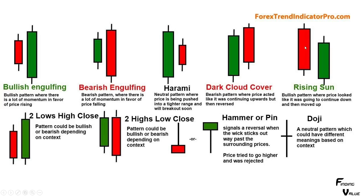The opposite pattern: we're coming down, we have a down day, it opens up below the prior candle, but throughout the day it works its way higher above halfway of that candlestick - this is called a bullish piercing or a rising sun. Patterns could be bullish or bearish depending on context. Then we've got a hammer or pin - this signals a reversal when the wick sticks out way past the surrounding prices. A doji, where the opening and closing price are the same, is a neutral pattern which could have different meanings based on context.